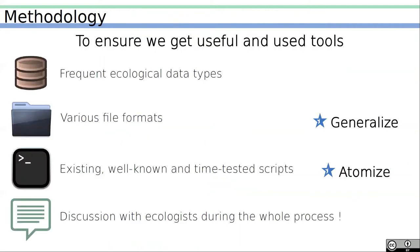Over the past year and a half, we worked on a methodological framework to ensure we get useful end-use tools. The first step is to start with tools that demand frequent ecological data types as input, then make the tools adaptable to various file formats through generalization of existing, well-known, and time-tested scripts. Those scripts would often require atomization through elementary steps, so discussions with ecologists would be needed throughout the whole process.